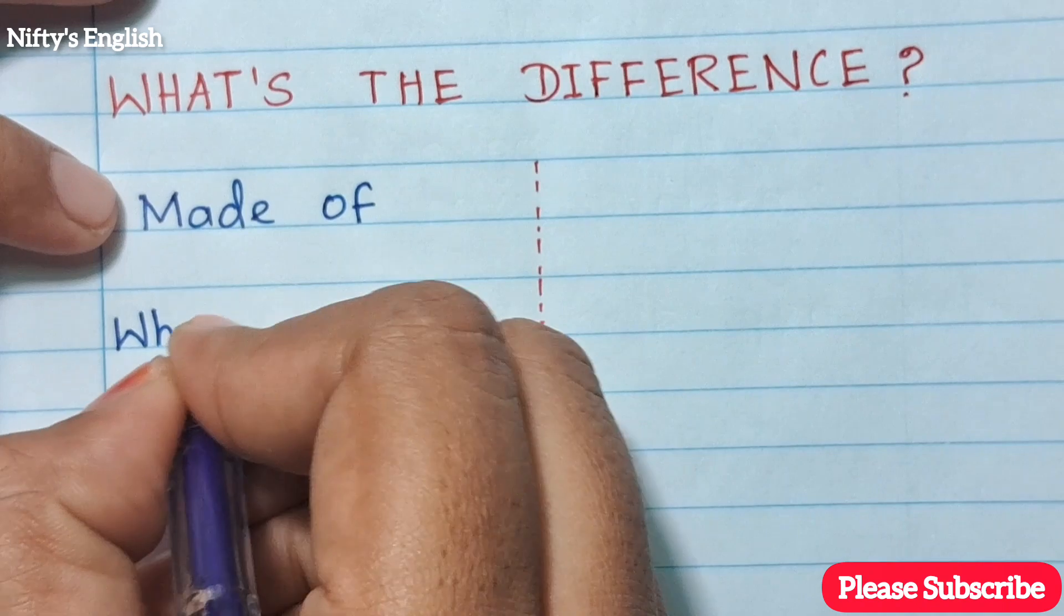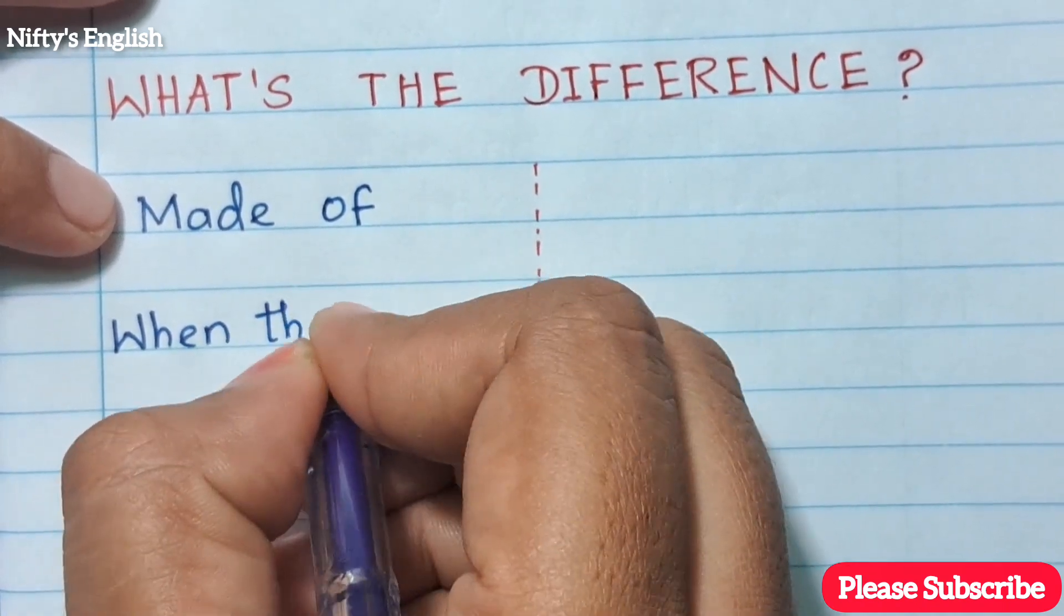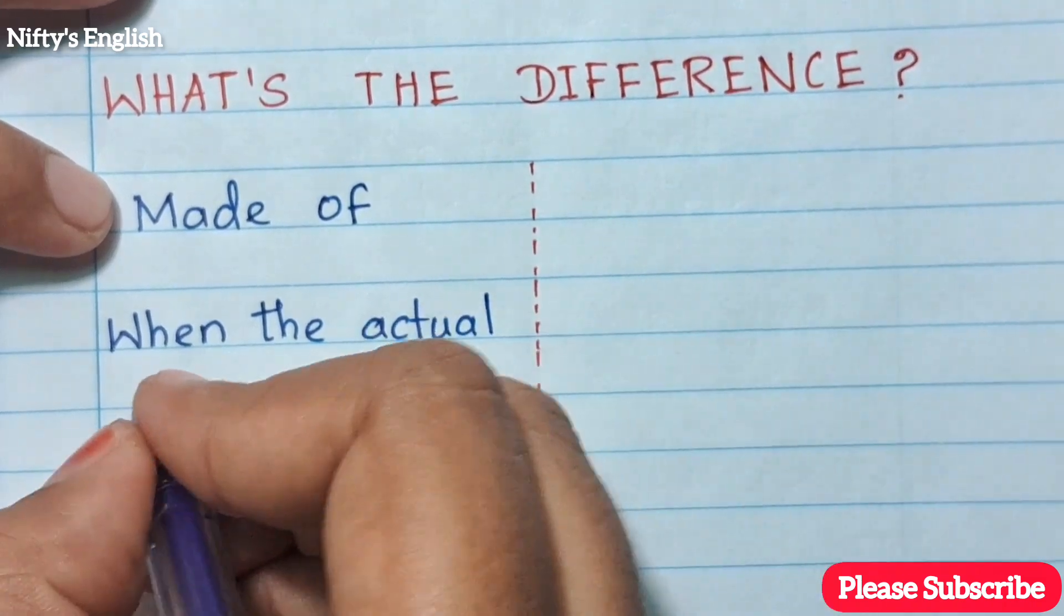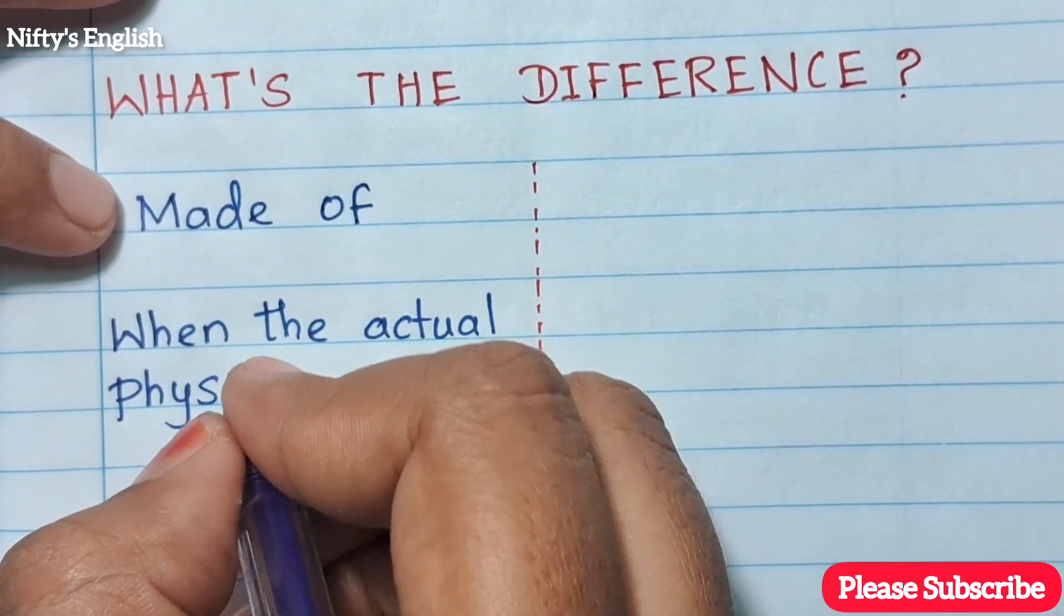Made of: when the actual physical form of the material used does not change during the process of making an item.